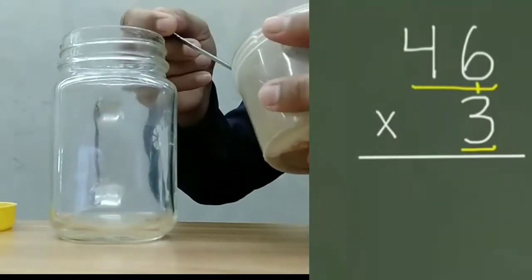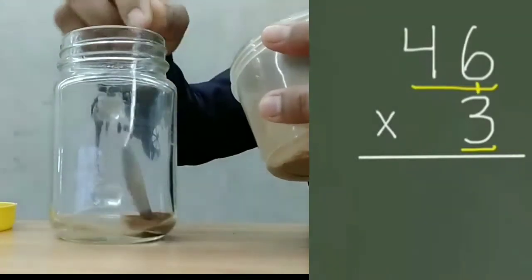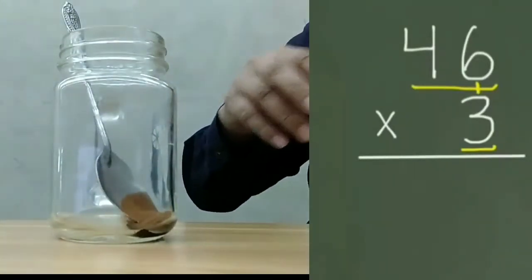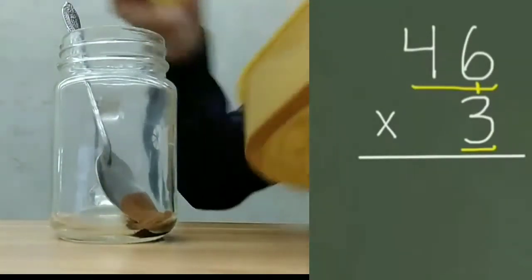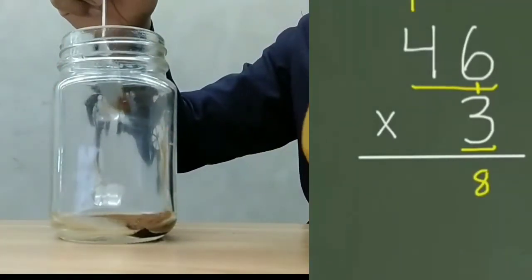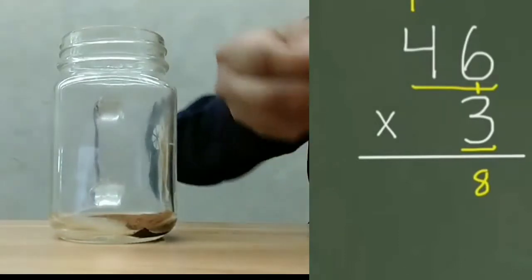So we start with 3 times 6. Once again, we start with our ones place value. 3 times 6 equals 18. So we carry our 1, put it in the tens place value, and we have our 8 in our ones.